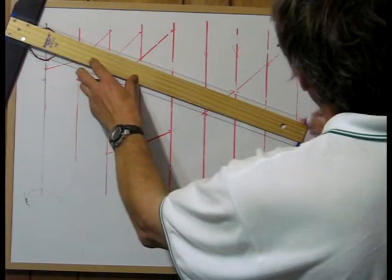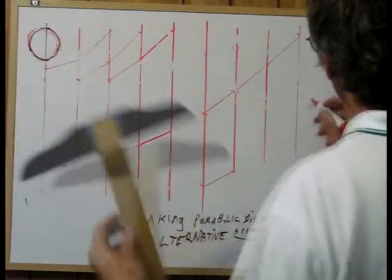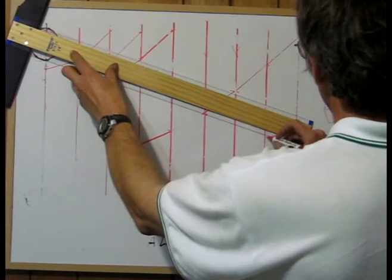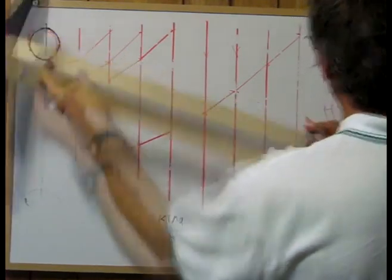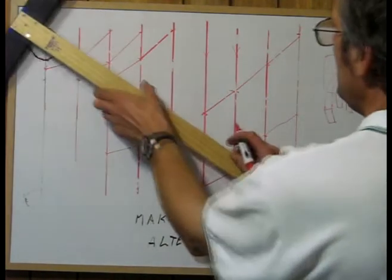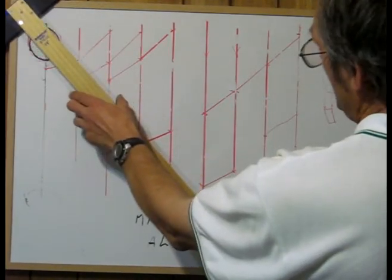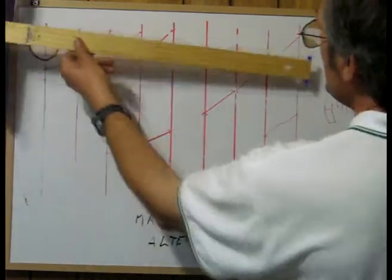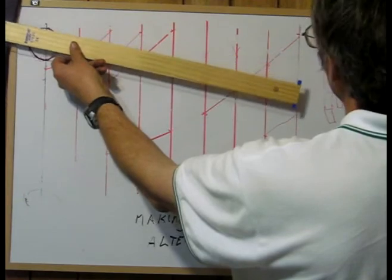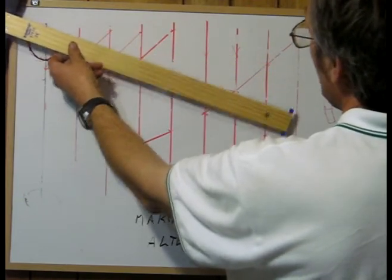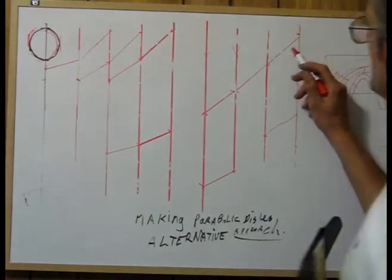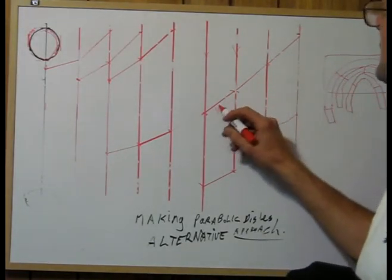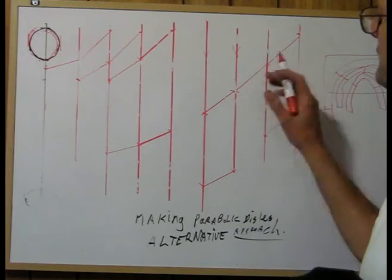So anywhere you swing this, you can do your mirror angle. So just with this, you can swing it around and you can make, you can very quickly design any parabolic dish size you like with this cone method.